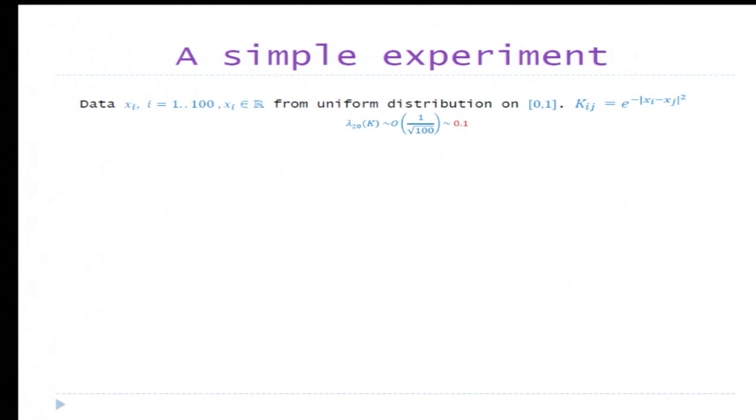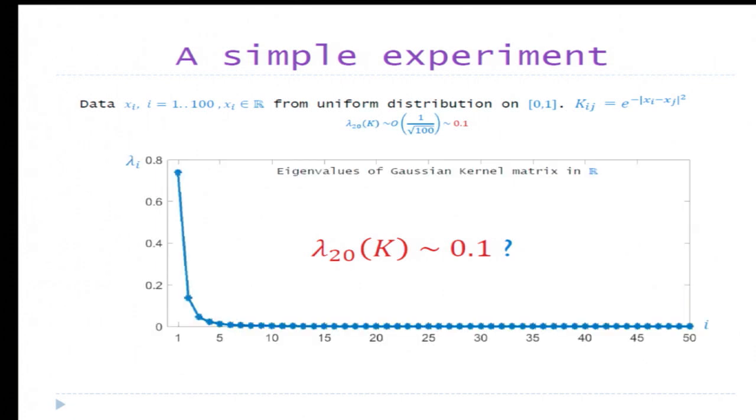I actually just chose 100 data points from zero-one interval from the uniform distribution. Take the simplest kernel function, xi minus xj squared. This is in one dimension. And if you believe what I just said before, you would expect that lambda 20 of K is approximately 1 over square root of 100, so it should be about 0.1. That's the hypothesis. Let's now see what the empirical evidence tells us.